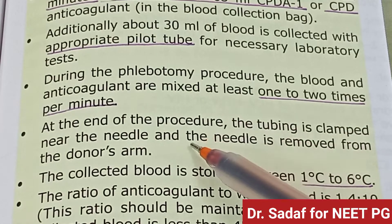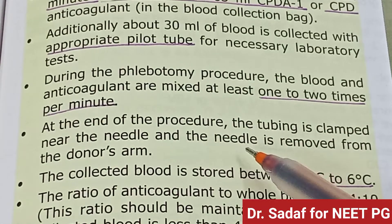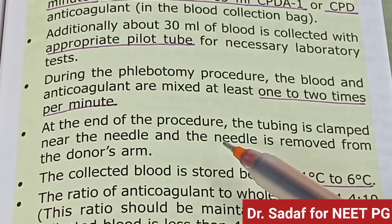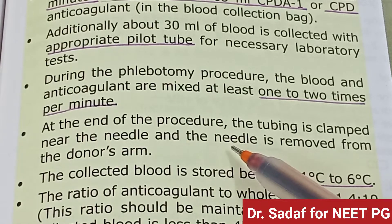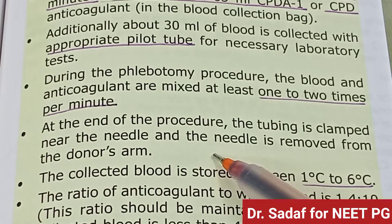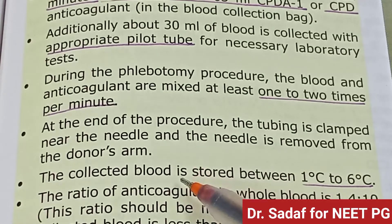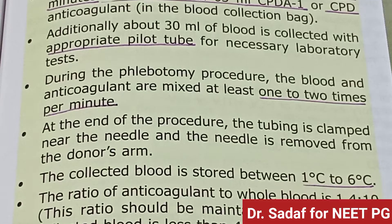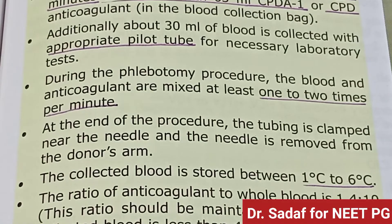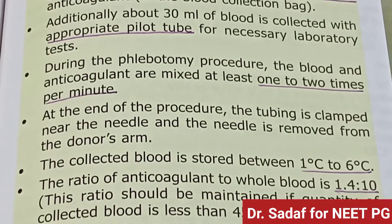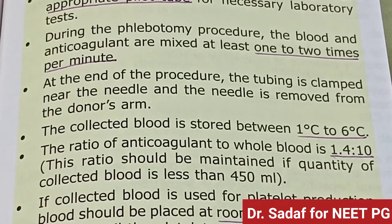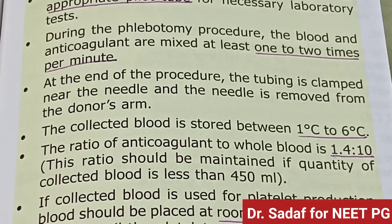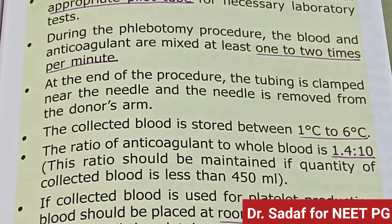At the end of the procedure, the tubing is clamped near the needle, and the needle is removed from the donor's arm. The collected blood is then stored at 1 to 6 degrees Celsius. The ratio of anticoagulant to whole blood is 1:4.